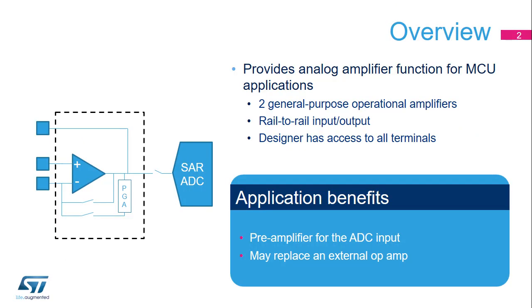Two operational amplifiers inside the product function as a general-purpose analog amplifier, which may reduce the need for an external standalone op-amp, as these op-amps can be configured in standalone mode with all terminals available for the user. It is possible to use them as a voltage follower, non-inverting and inverting amplifiers, as well as analog filters such as low- or high-pass filters.